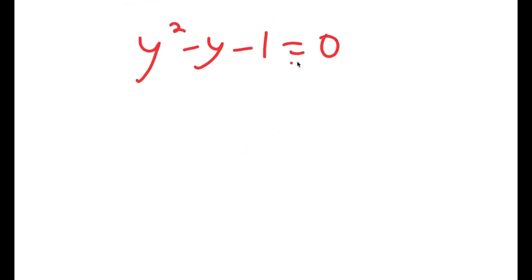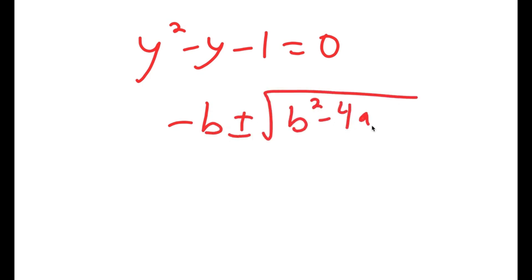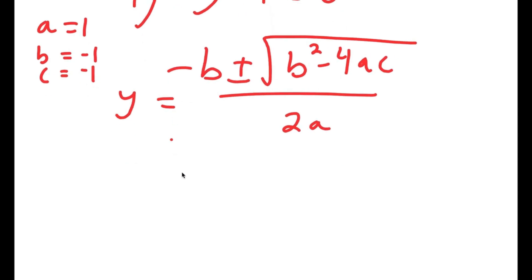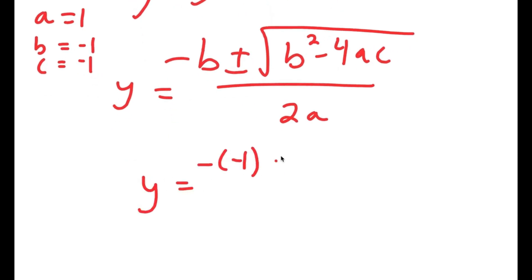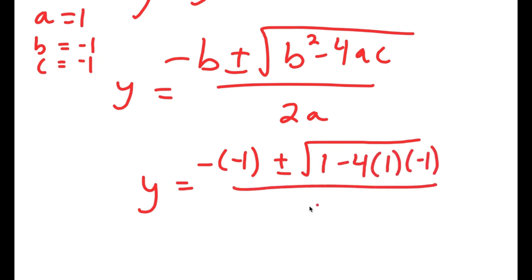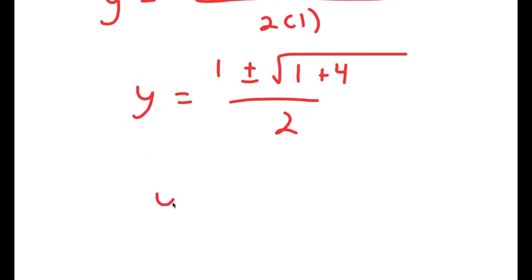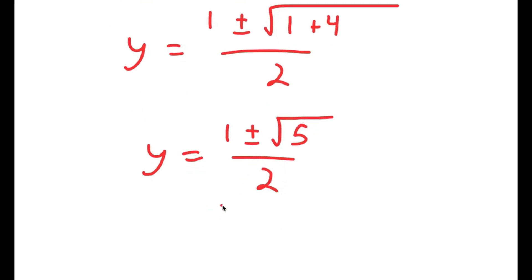To solve this equation, I'll use the quadratic formula: negative b plus or minus the square root of b squared minus 4ac, all over 2a. Here a equals 1, b equals negative 1, and c equals negative 1. So y equals negative of negative 1 plus or minus the square root of (negative 1) squared minus 4 times 1 times negative 1, all over 2 times 1. This equals 1 plus or minus the square root of 1 plus 4 over 2, which gives y equals 1 plus or minus the square root of 5, all over 2.